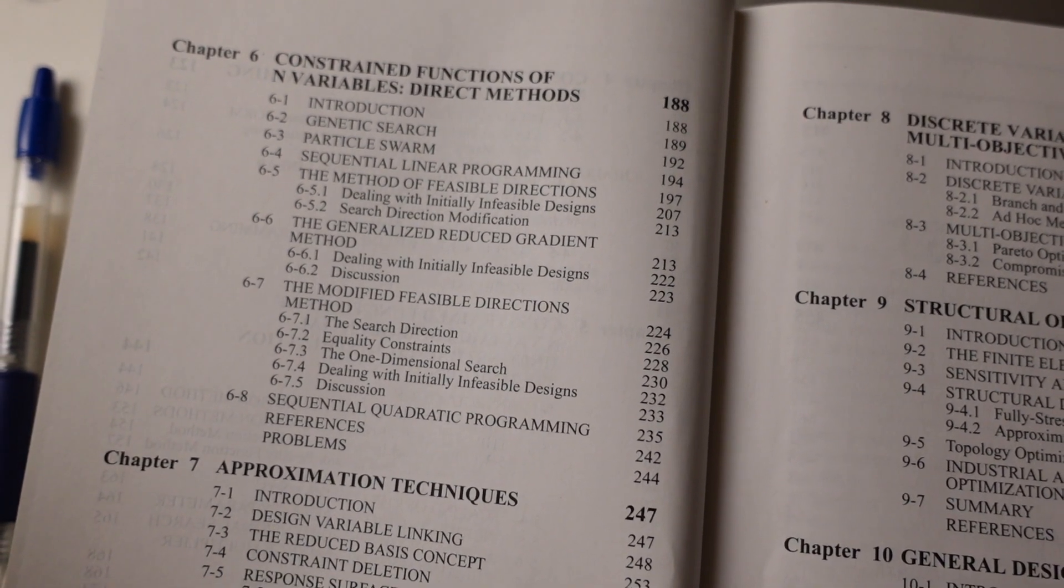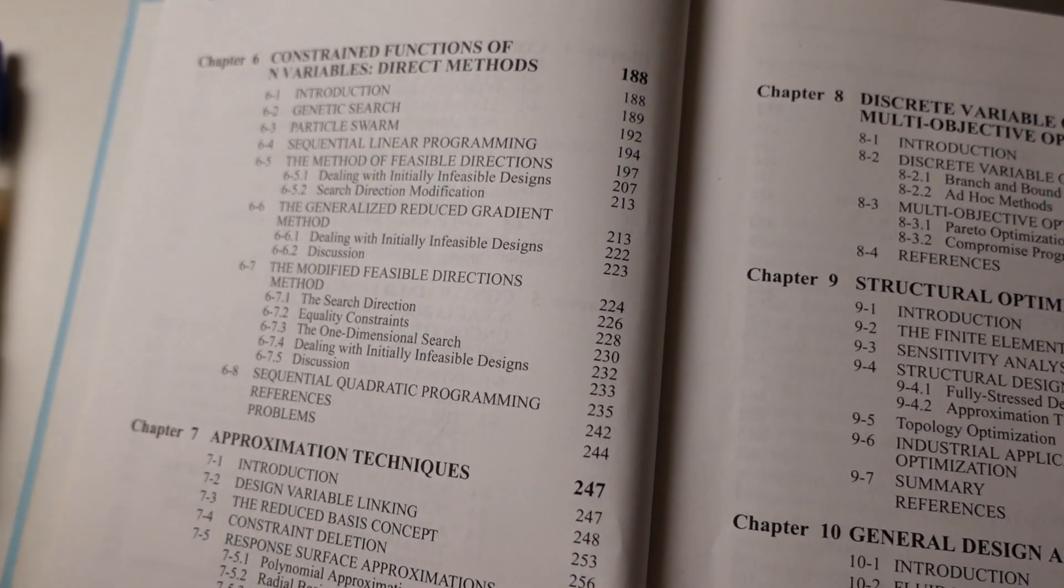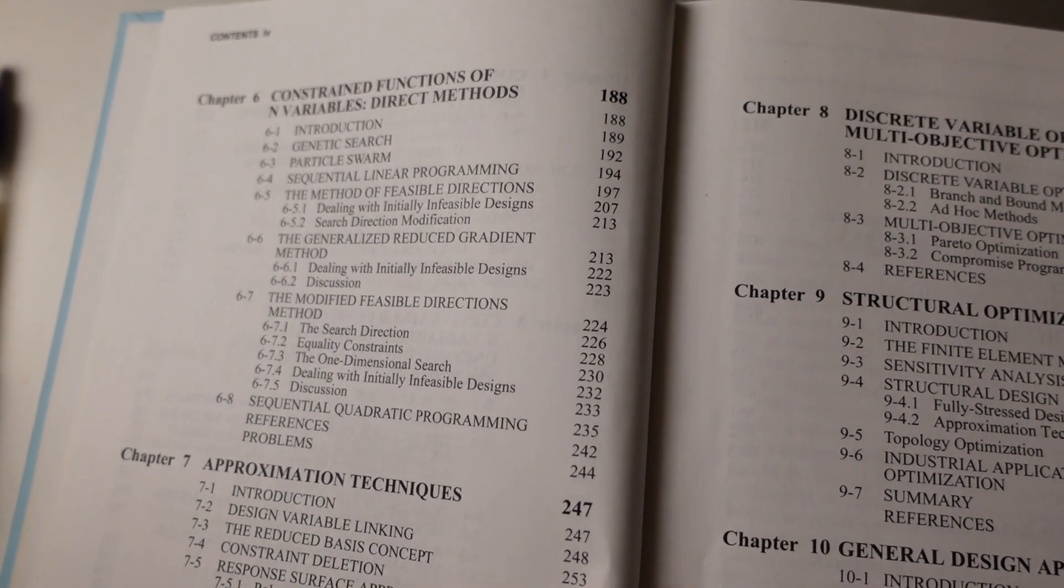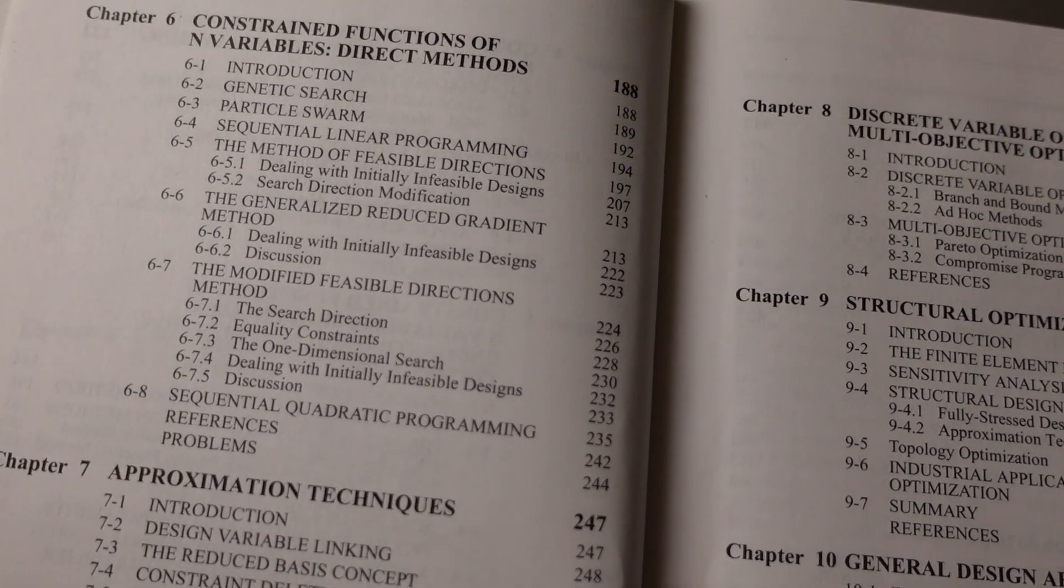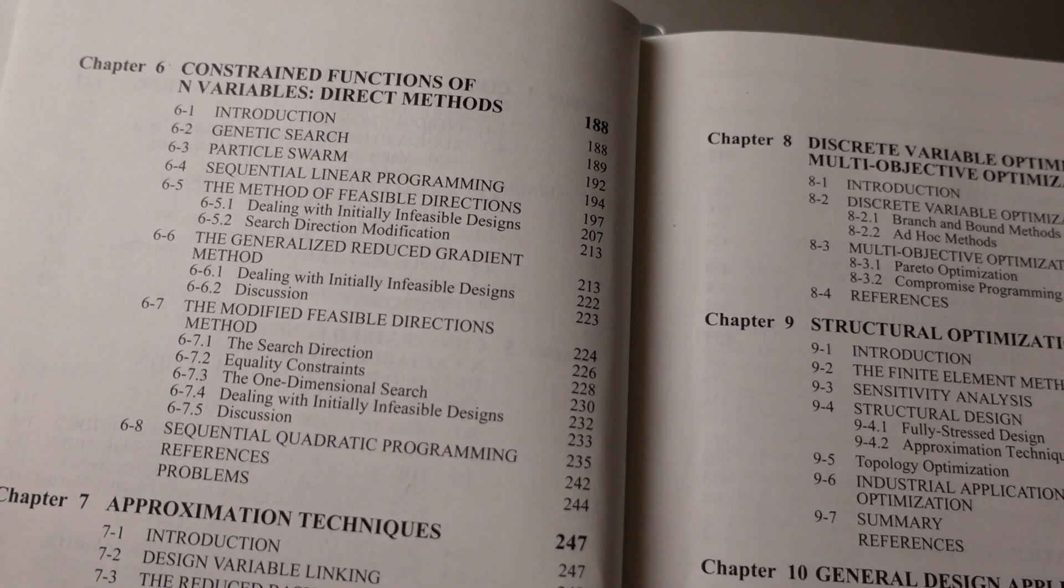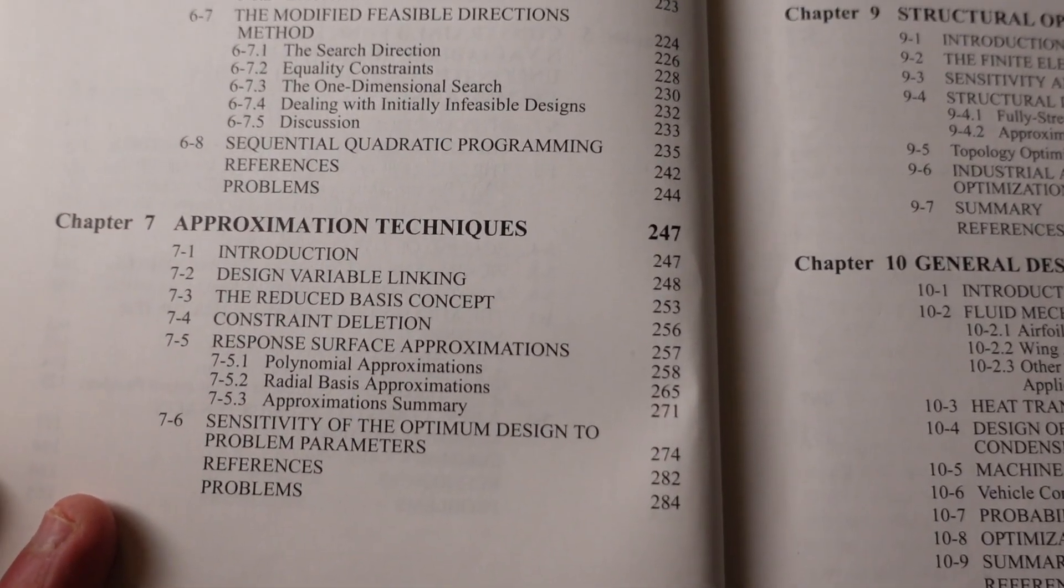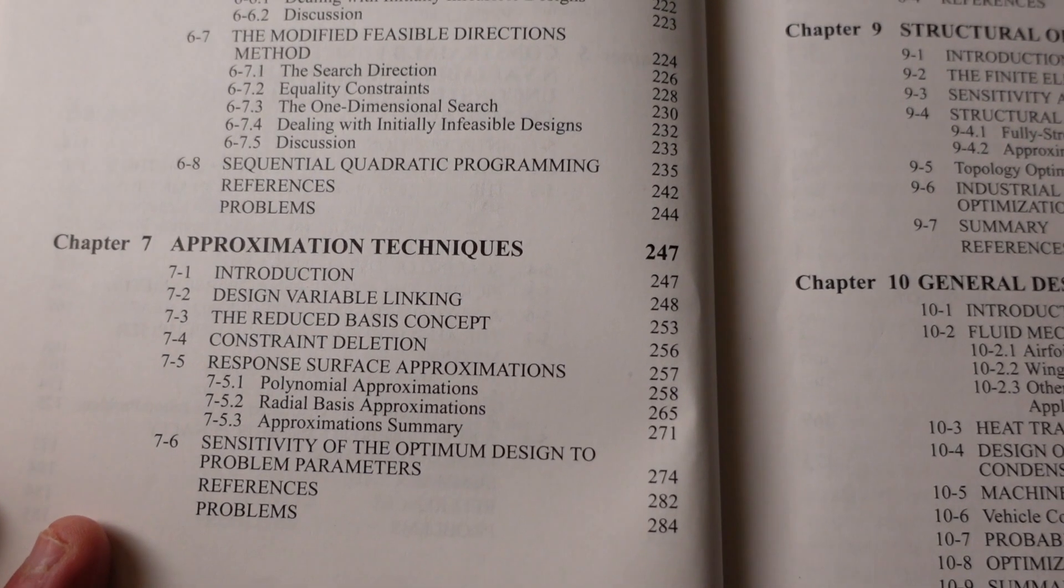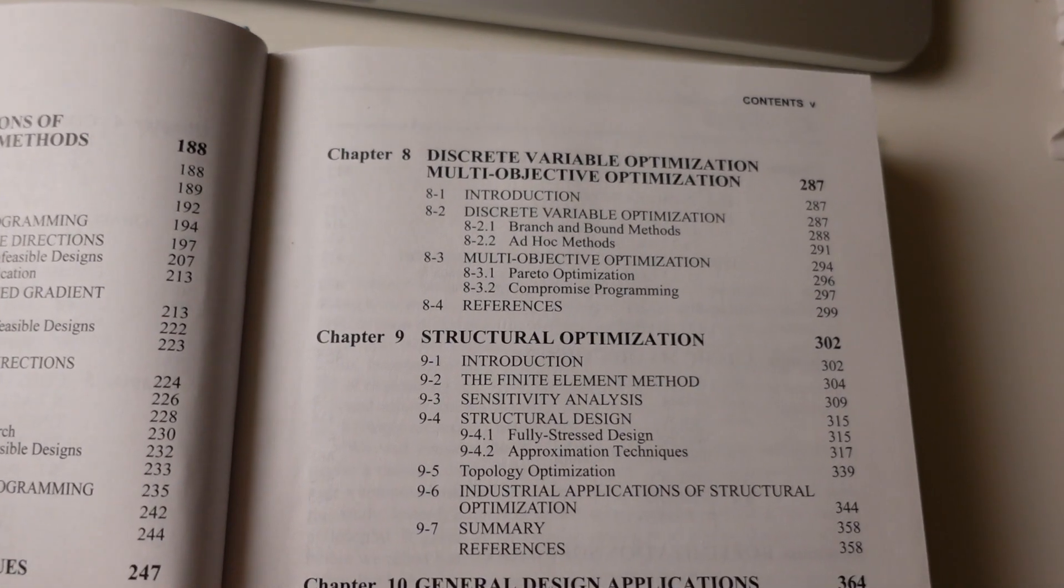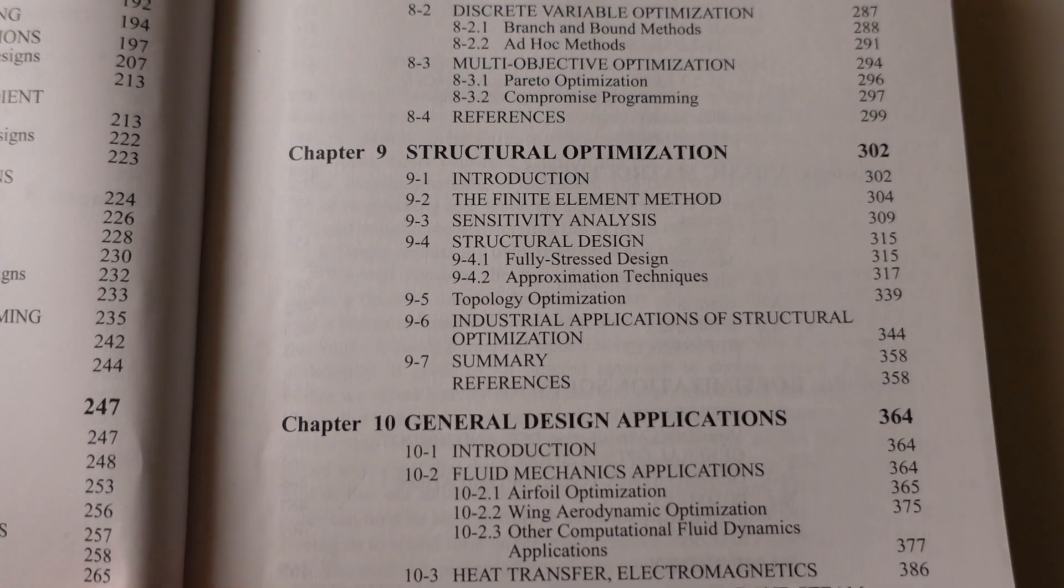Genetic search, particle swarm, sequential linear programming. It probably doesn't talk about other methods like simulated annealing. If I remember correctly, and then the modified feasible directions method, et cetera. Then he deals with the approximation techniques and introduces the important concept of the radial basis function and multi-objective optimization, structural optimization, the finite element method.